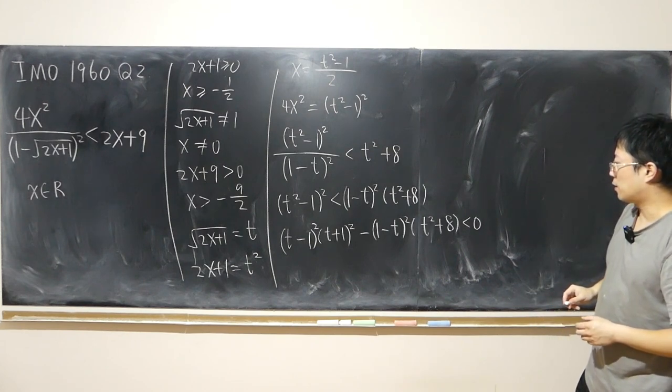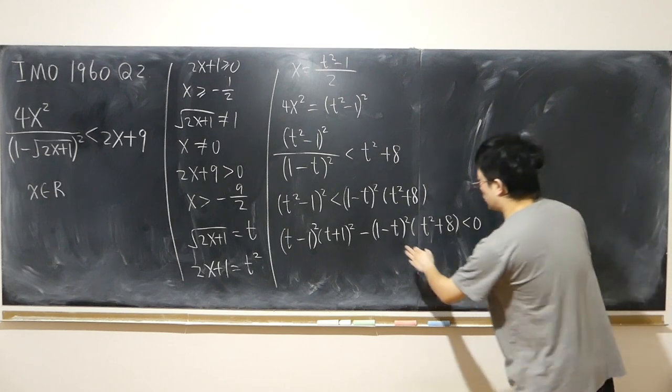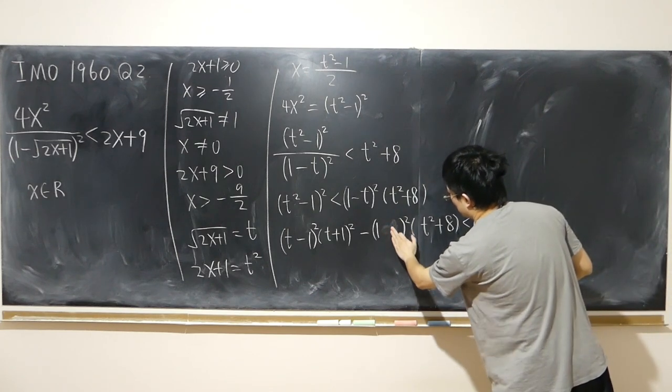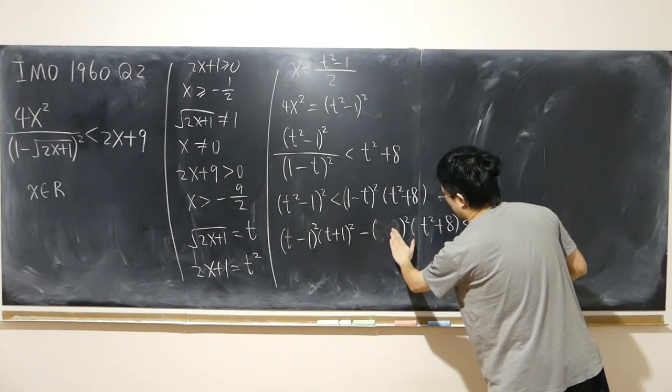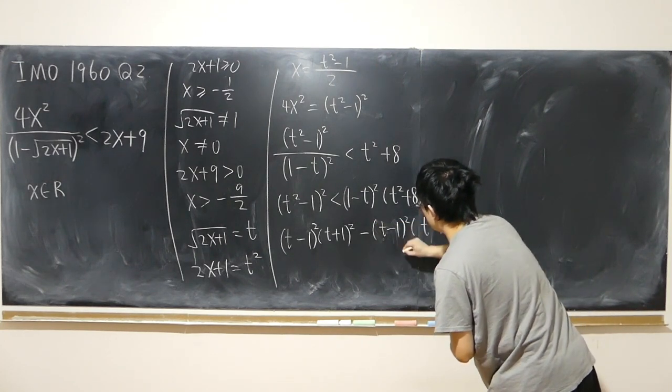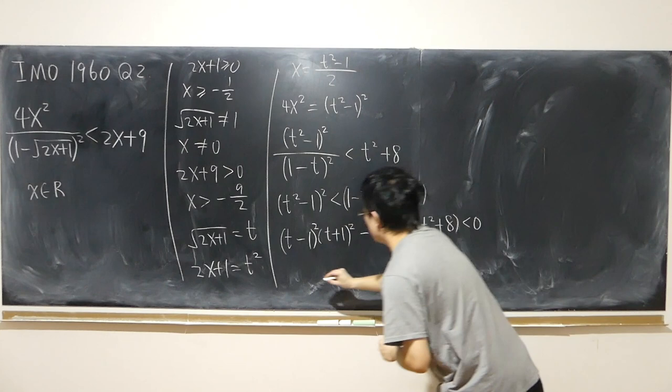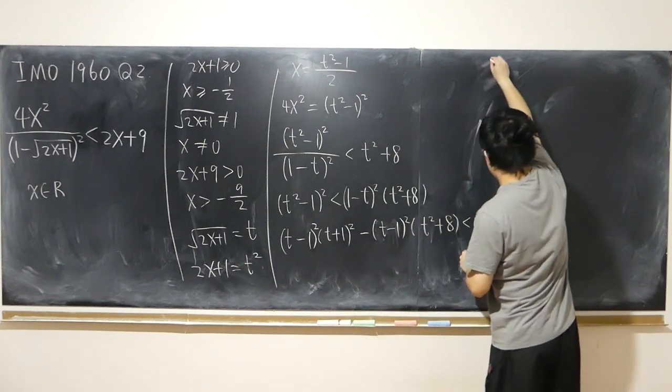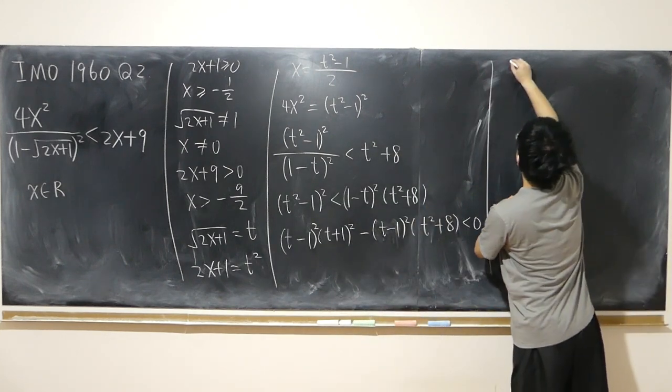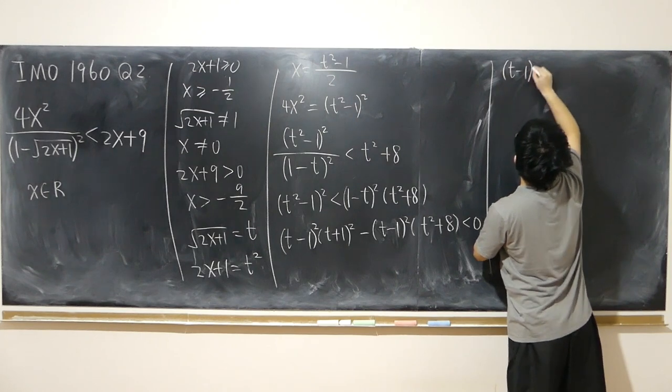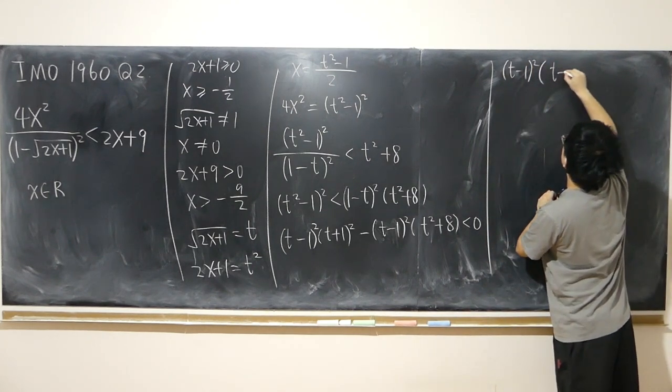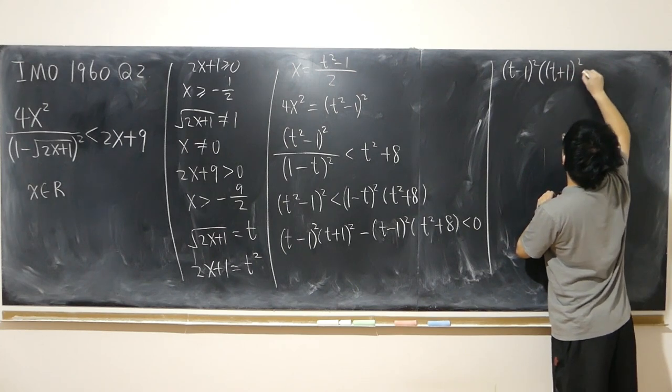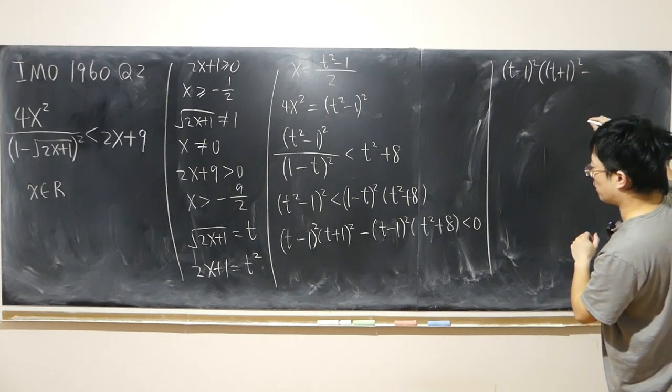So like I said, this time, common factor, 1 minus, okay, rewrite it as t minus 1. Same thing, because they're square. So t minus 1 quantity squared, common factor. And t plus 1 square minus t squared plus 8.